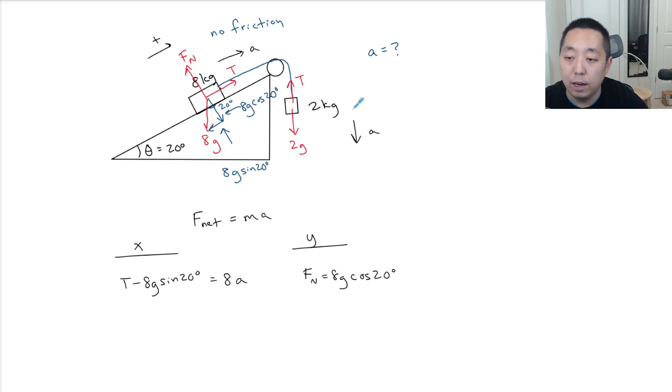Now for the two kilogram block when we say the net force equals ma, we'll say down is positive. Why down positive? Because the acceleration of this block I said is downward, and so I'm going to set the downward to be the positive direction, the direction it's accelerating. So then I say 2g minus T is equal to ma—the mass of this block is 2—so 2a.